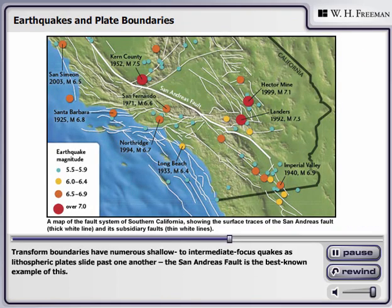Transform boundaries have numerous shallow to intermediate focus quakes as lithospheric plates slide past one another. The San Andreas Fault is the best known example of this.